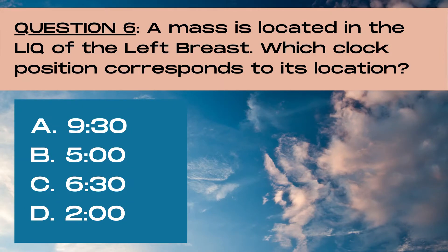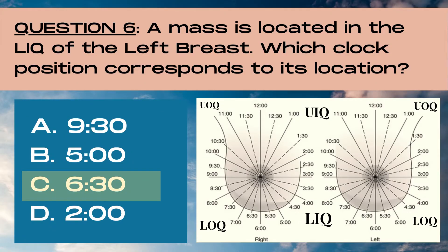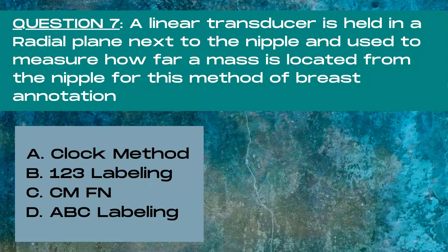Question 6. A mass is located in the lower inner quadrant of the left breast. Which clock position corresponds to its location? A 9:30, B 5 o'clock, C 6:30, or D 2 o'clock? The answer is C, 6:30. In the left breast, 6 o'clock is at the inferior portion of the breast, and the 6:30 position is just slightly medial to that in the lower inner quadrant of the left breast.